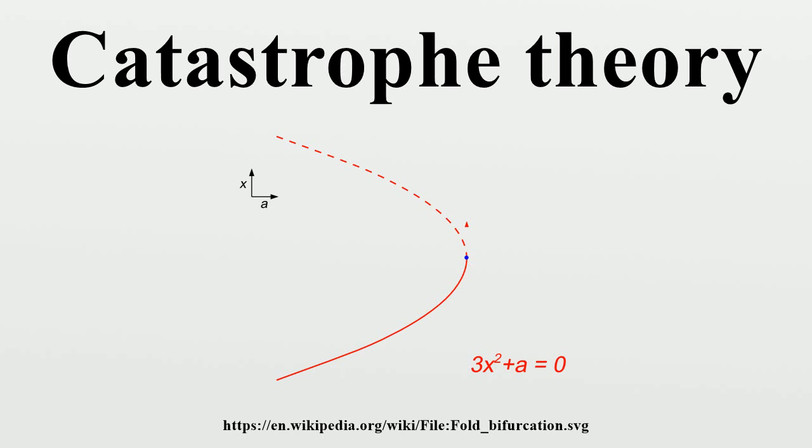One can also consider what happens if one holds B constant and varies A. In the symmetrical case B equals zero, one observes a pitchfork bifurcation as A is reduced, with one stable solution suddenly splitting into two stable solutions and one unstable solution as the physical system passes to A less than zero through the cusp point. Away from the cusp point, there is no sudden change in a physical solution being followed. When passing through the curve of fold bifurcations, all that happens is an alternate second solution becomes available.